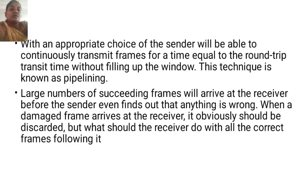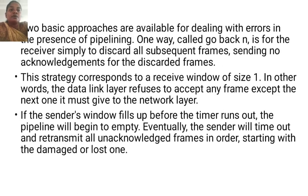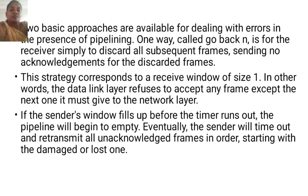A large number of succeeding frames will arrive at the receiver before the sender even finds out that anything is wrong. When a damaged frame arrives at the receiver, it obviously should be discarded. But what should the receiver do with all the correct frames following it? Two basic approaches are available for dealing with errors in the presence of pipelining. One way, called go-back-N, is for the receiver simply to discard all subsequent frames, sending no acknowledgements for the discarded frames. This strategy corresponds to a receive window of size 1 — the data link layer refuses to accept any frame except the next one it must give to the next layer. If the sender window fills up before the timer runs out, the pipeline will begin to empty. Eventually the sender will time out and retransmit all unacknowledged frames in order, starting with the damaged or lost one.